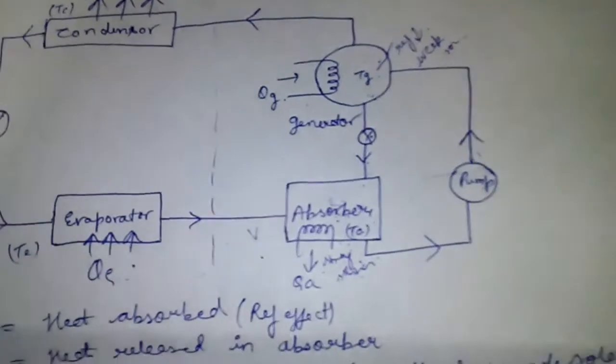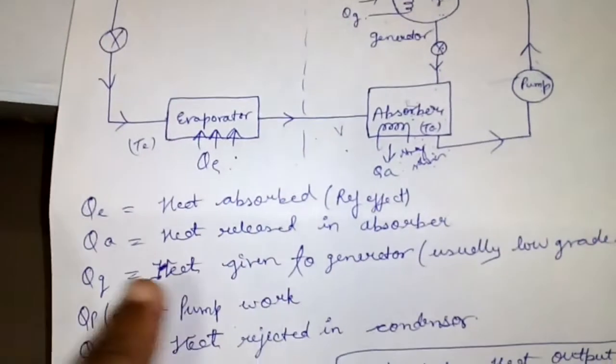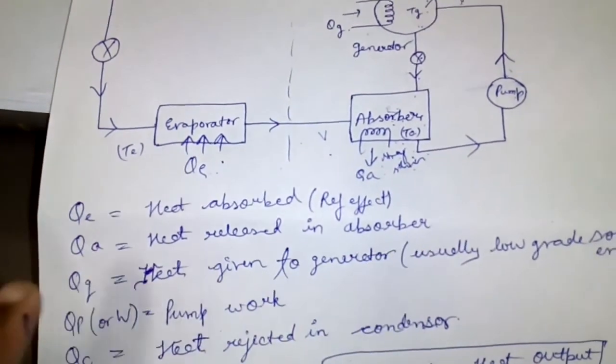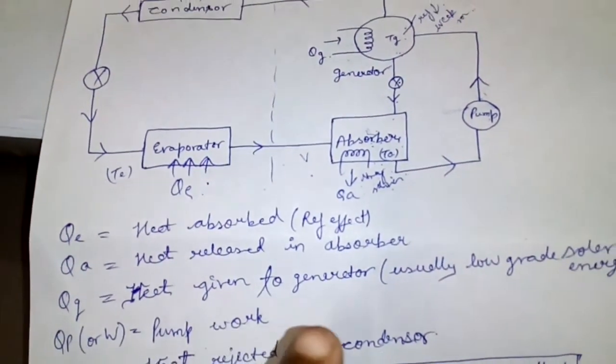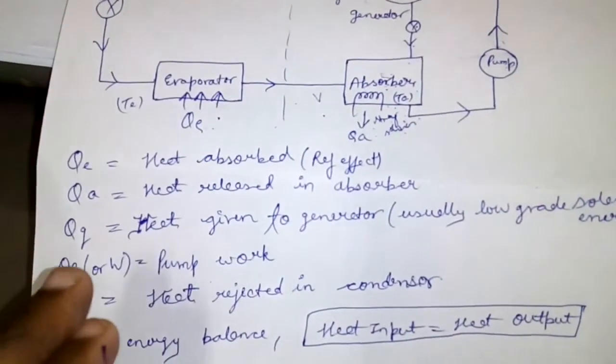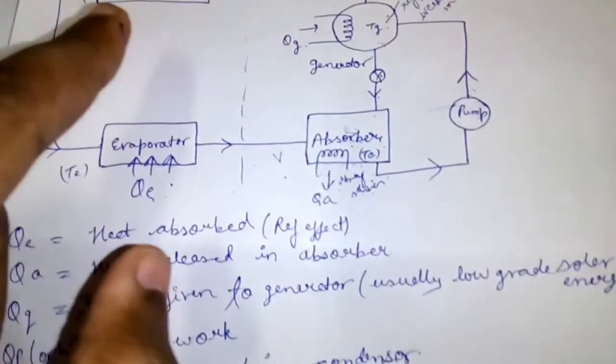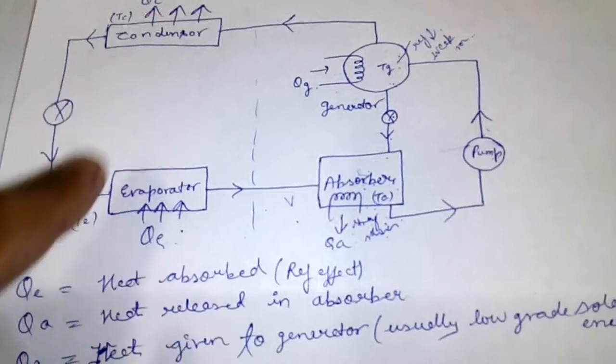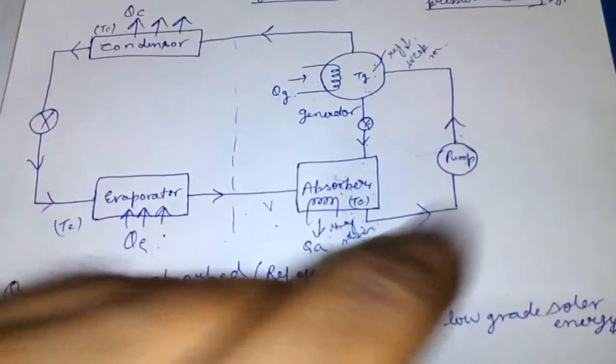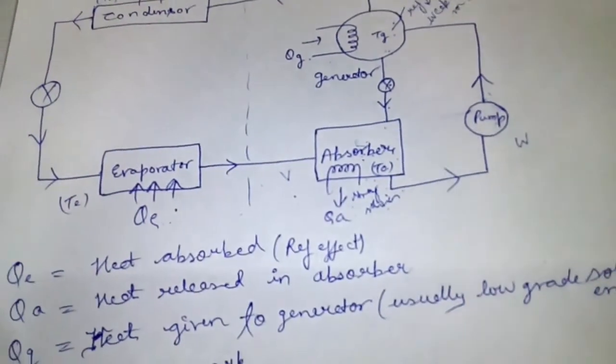Now there are five main types of heat associated: QE heat absorbed or refrigeration effect, QA heat released in absorber, QG heat given to the generator that is low grade solar energy, QP or W that is the pump work, and QC heat rejected in condenser. This is QC, QE, QA, QG, and W.